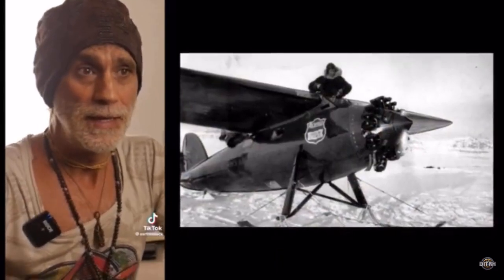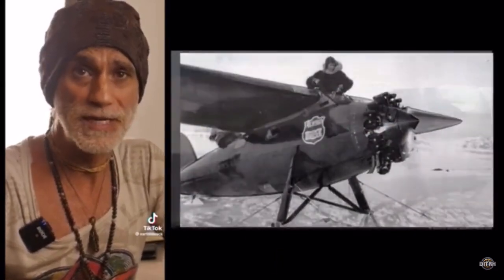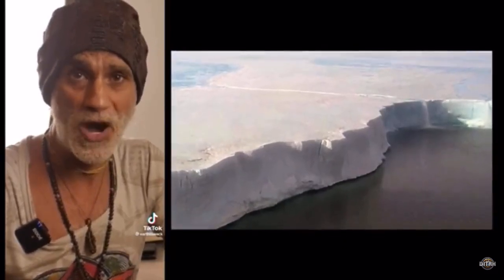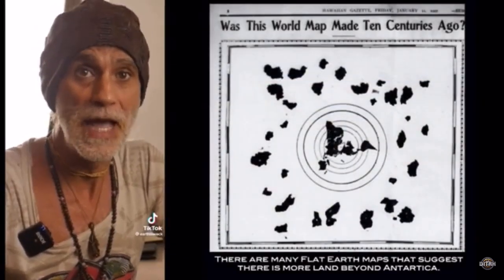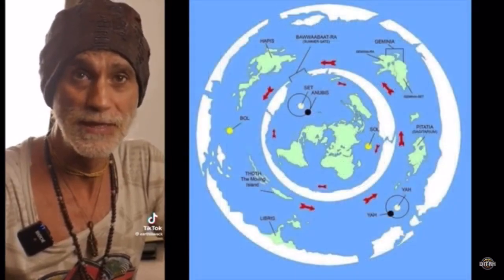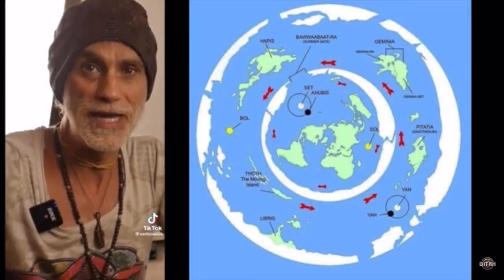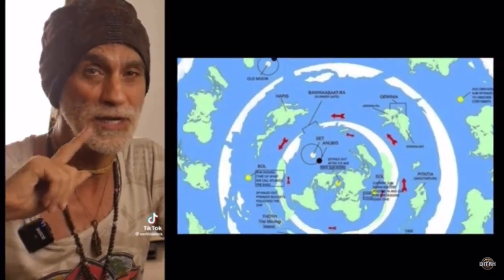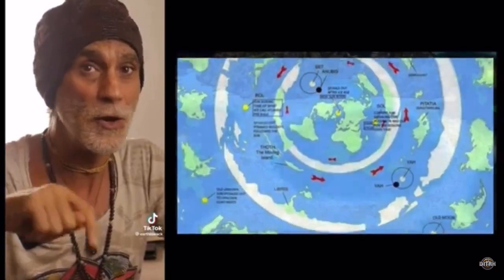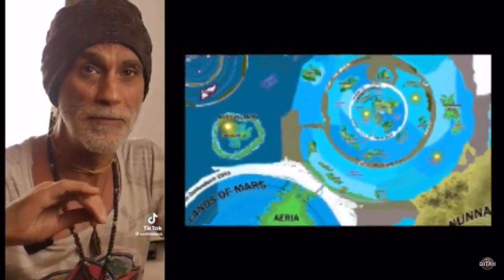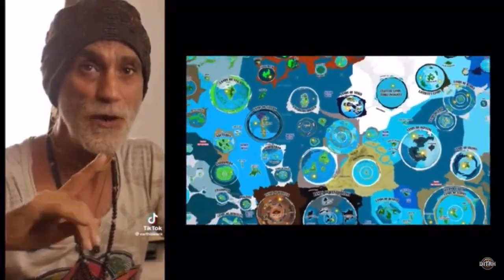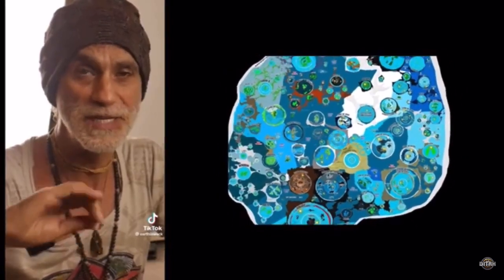Captain George Hubert Wilkins, a contemporary of Admiral Byrd, flew beyond Antarctica — five thousand miles according to his records. He said that he found many lands and peoples five thousand miles beyond Antarctica. That's just one example of an explorer who found lands not on any of our maps. They are excluded from all of our maps. That's why international pilots have no-fly zones — because they don't want those lands to be discovered.